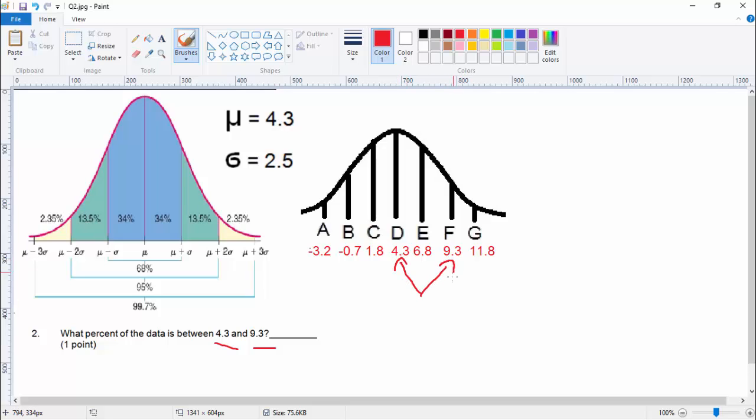So we know between 4.3 and 6.8, that's over here. And we know between 6.8 and 9.3 is that. So theoretically, just do 34% plus 13.5%. And what does that equal? That equals 47.5%. And so that's what you would get there.